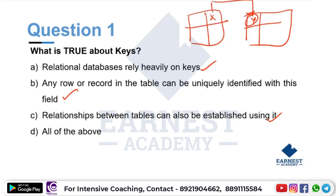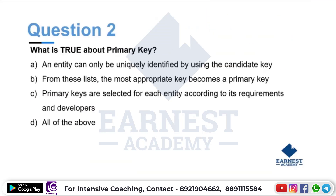You can see the primary key — it establishes the relationship between tables. A primary key can only be used to uniquely identify records. From the list, the most appropriate attribute becomes the primary key. Primary keys are selected for each entity according to its requirement and the developer's choice.